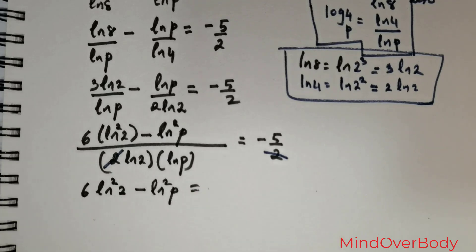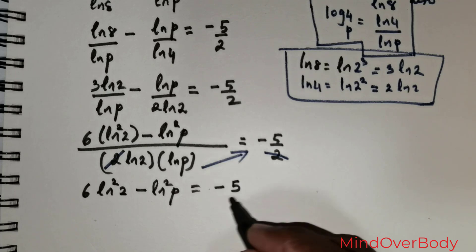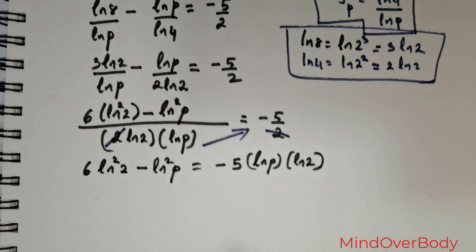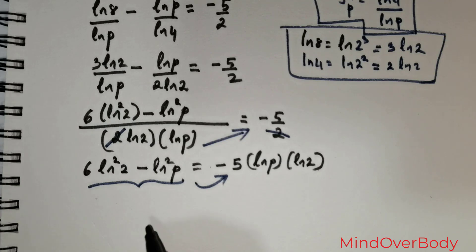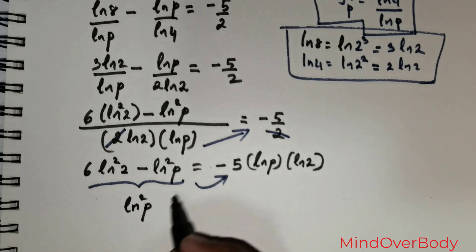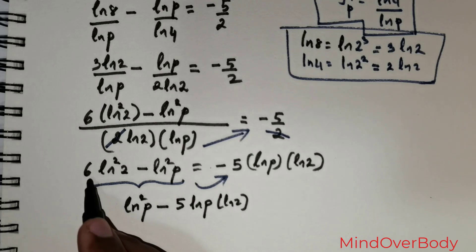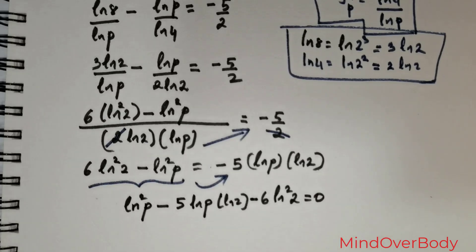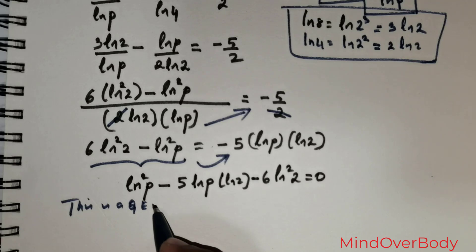Cross-multiplying and bringing all quantities to the right and equating to 0, I start with ln²(p) followed by negative 5·ln(p)·ln(2), and the positive quantity crosses over to become negative 6·ln²(2), equals 0. This is a quadratic equation in ln(p).